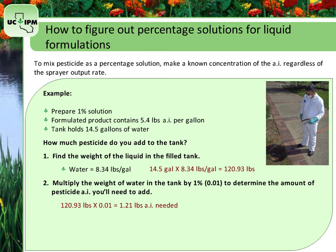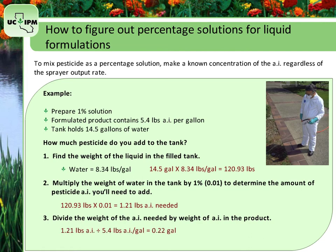Divide the weight of active ingredient needed by the weight of active ingredient in the product to get how much product to add to the tank. 1.21 pounds of active ingredient divided by 5.4 pounds of active ingredient per gallon equals 0.22 gallons of product. So for a 14.5-gallon tank, 0.22 gallons should be pesticide product and 14.28 gallons should be water, so the combined amount is 14.5 gallons.